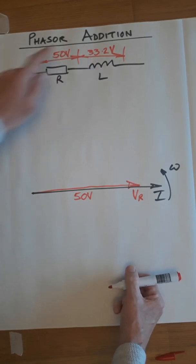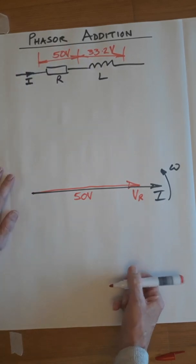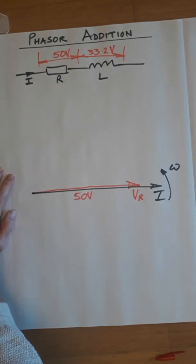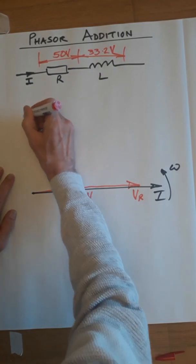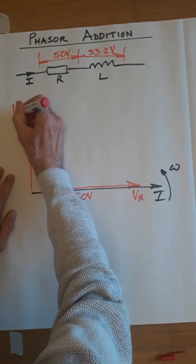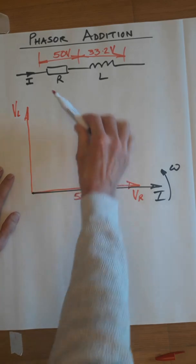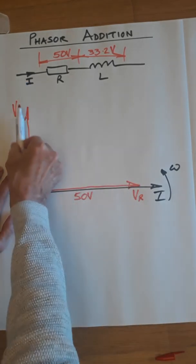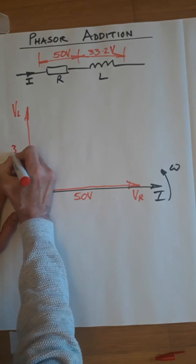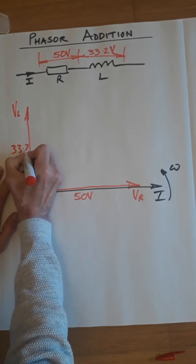The voltage across the inductor is 33.2. When you're drawing such a tiny diagram, the 0.2 will become virtually irrelevant. But you're going to draw that up there. So that is VL. And you're going to use the same scale here as you're going to do here. So, this is going to be 33.2.